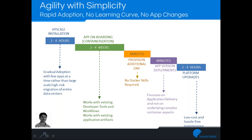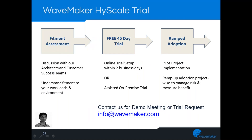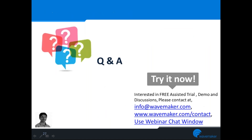One key differentiator of HighScale is its adoption speed. You can install the platform in two to four hours. Onboarding an application to containerize takes two to four weeks — as opposed to months previously. Additional environment setup and upgrades are a matter of minutes. We offer a free assisted trial: a fitment assessment where our teams work with your teams to understand your application, followed by a 45-day full-feature trial — either online or on-premise — where you can containerize your custom workloads.